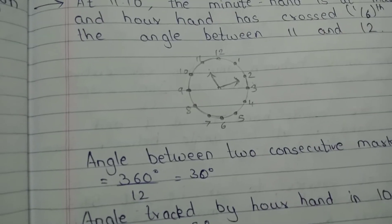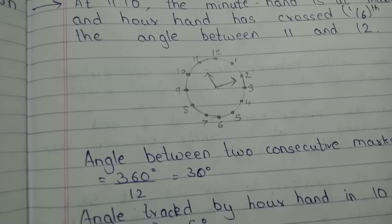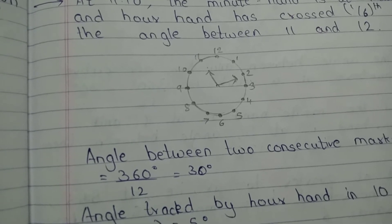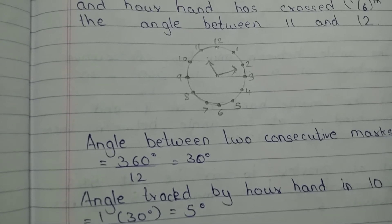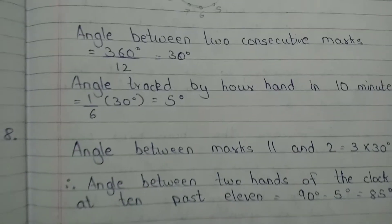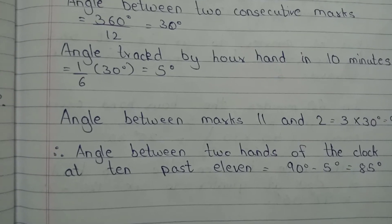That means the angle between 12 and 1 is 30 degrees, the angle between 1 and 2 is 30 degrees. The angle between every point is 30 degrees.